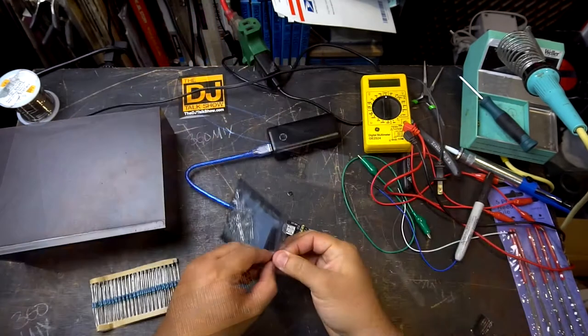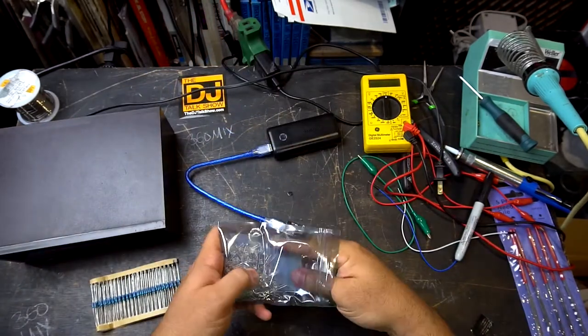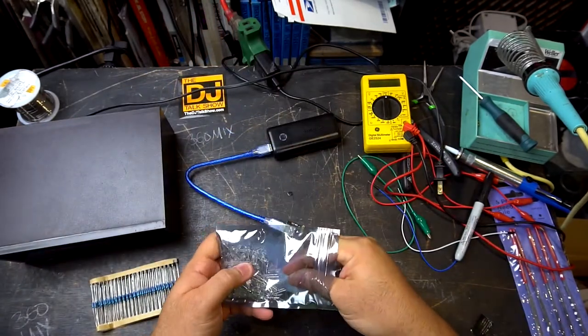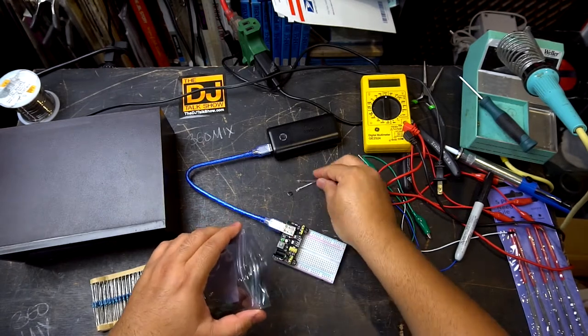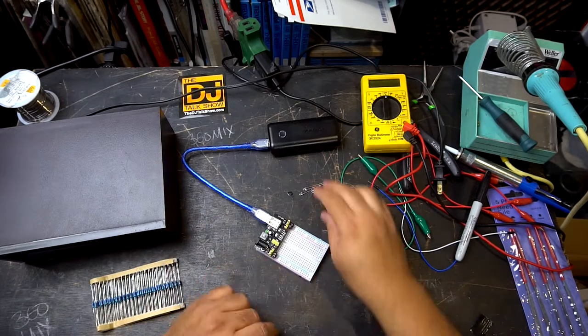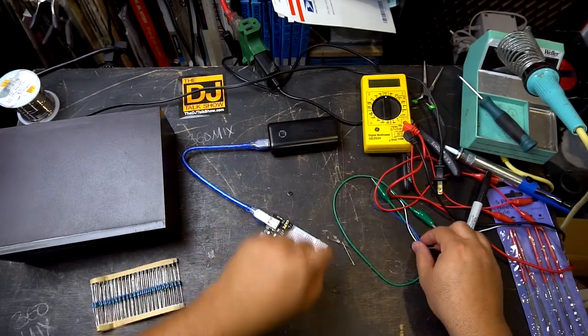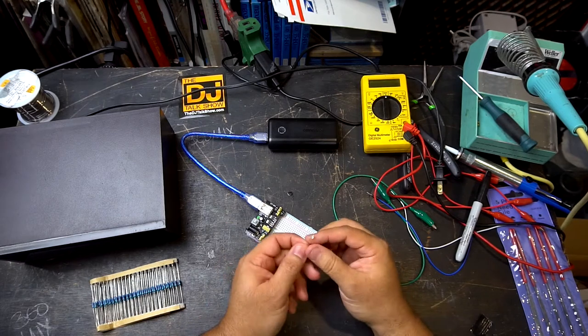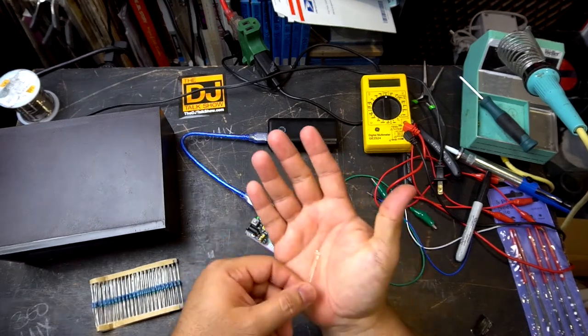For this project we're going to need three LEDs. I ordered this package—it came with about a hundred LEDs, maybe like seven bucks for the whole package. The cool thing about these lights is that they're three millimeters, they're small, but I got the clear ones, I didn't get the frosted ones.